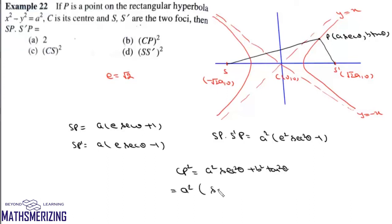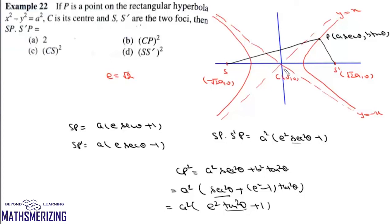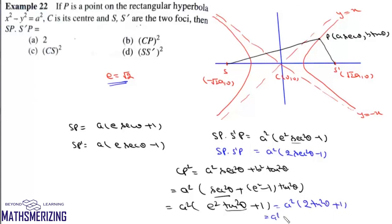Writing b² = a²(e² - 1), CP² = a²[sec² θ + (e² - 1) tan² θ] = a²[e² tan² θ + sec² θ - tan² θ] = a²[e² tan² θ + 1]. With e = √2: SP · S'P = a²(2 sec² θ - 1) and CP² = a²(2 tan² θ + 1). Since tan² θ = sec² θ - 1, CP² = a²(2 sec² θ - 1). Therefore SP · S'P = CP², which is option (b).